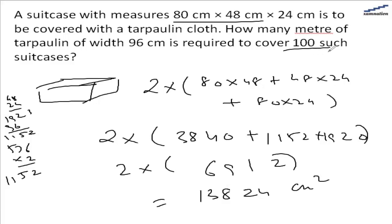The total area for 100 suitcases is 1,382,400 cm². We need to find out how many meters of tarpaulin of width 96 cm is required to cover this total area.